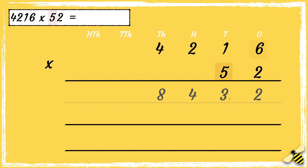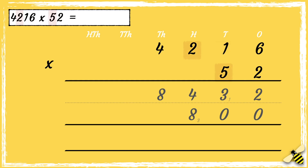Now we need to multiply five tens by six. As we're multiplying the number by five tens, we need to use zero as a placeholder in the ones column. So five times six is thirty. We can drop the three down into the hundreds column. Then we do five tens multiplied by one ten: five times one is five, then add three more which is eight. Next, five tens multiplied by two hundreds: five times two is ten. We can drop the one down in the ten thousands column. Then we work out five tens multiplied by four thousands: five times four is twenty, and then add the extra one is twenty-one.